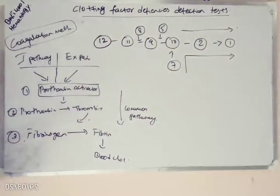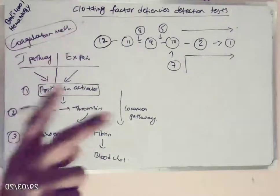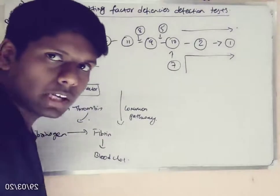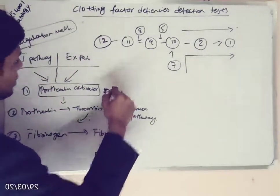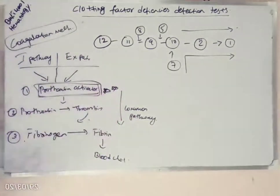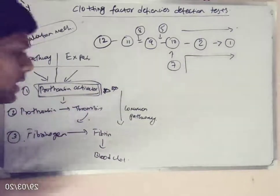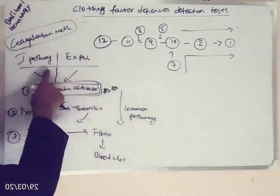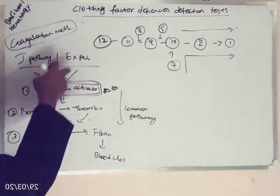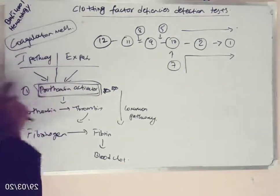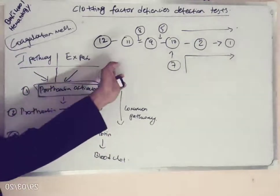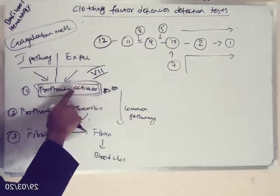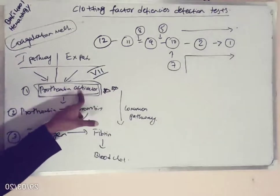Let me give a brief introduction. Coagulation mechanism has two pathways: intrinsic pathway or extrinsic pathway. The main aim of coagulation mechanism is to form something called prothrombin activator. This prothrombin activator can be formed by either the intrinsic pathway or the extrinsic pathway. In the intrinsic pathway, several clotting factors are involved in producing prothrombin activator, while in the extrinsic pathway, factor 7 activates and forms prothrombin activator.